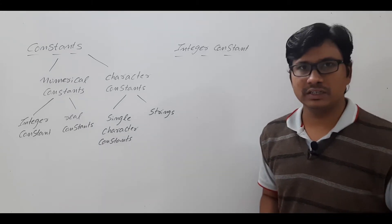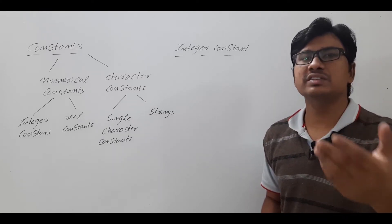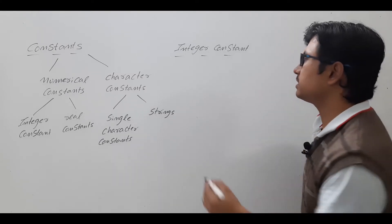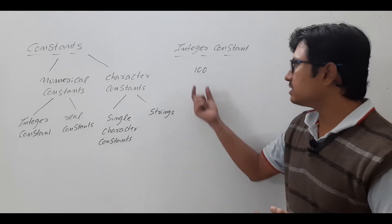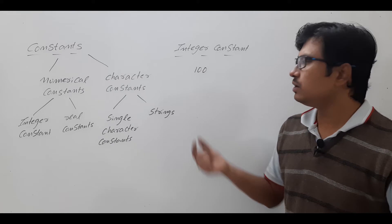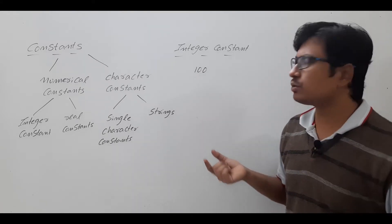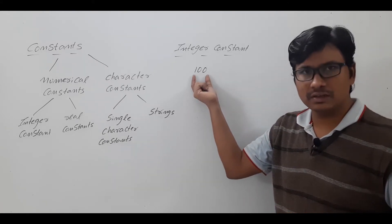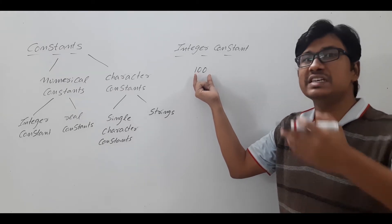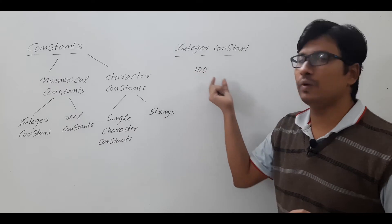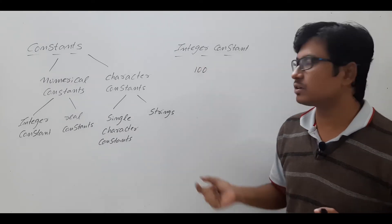What is meant by a constant? A constant is nothing but a fixed value — you are not changing the value. For example, if you say 100, it is an integer constant whose value is 100 only. If I talk in rupees I will say 100 rupees. If I say it as a binary number it will be 1 0 0. But I am talking about it as an integer constant.